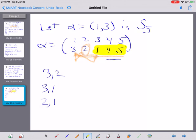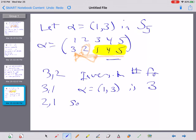And as a consequence, the inversion number for alpha equal 1 goes to 3 and 3 goes to 1 is 3. So alpha is an odd permutation. Even though it's a 2 cycle as a permutation, it is an odd permutation.